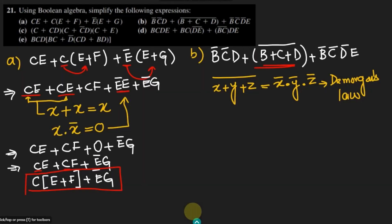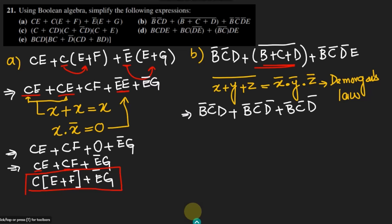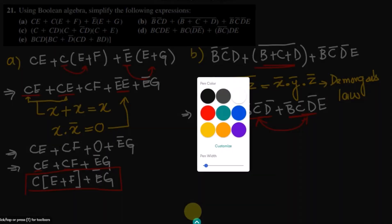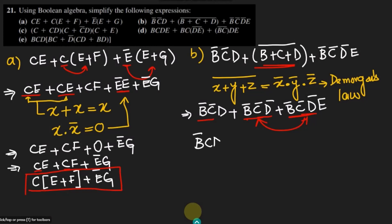Applying De Morgan's law here, we will get B prime C prime D, and similarly here we will have B prime dot C prime dot D prime, plus B prime C prime and D prime and E. We can very easily see that B prime C prime is common in all terms. So taking B prime C prime D prime common from two of these expressions, we get B prime C D plus B prime C prime D prime times (1 plus E).